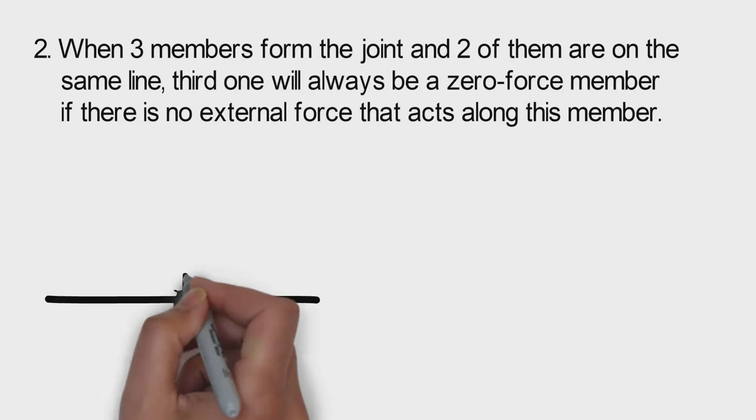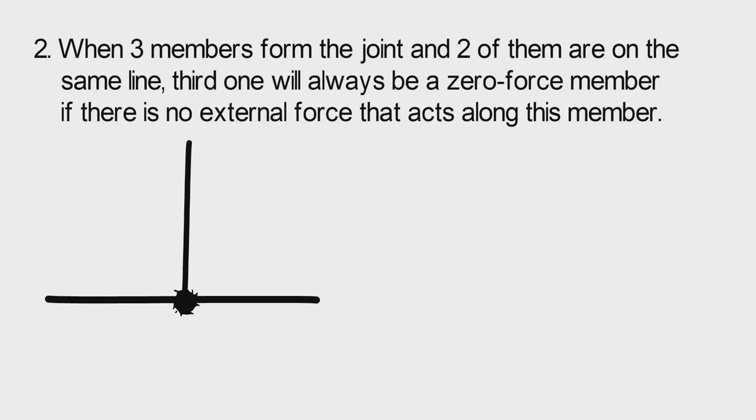The idea behind this one is the same as before. Even if you have force on the two collinear members, the third one is zero force because those two forces cancel each other and there is no other force to balance the third member. That's why it can't have any force.